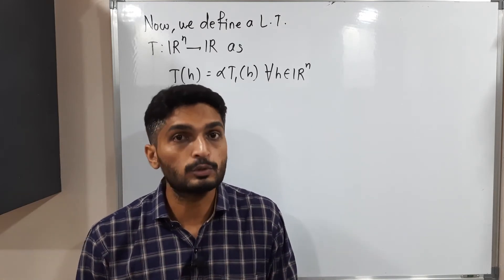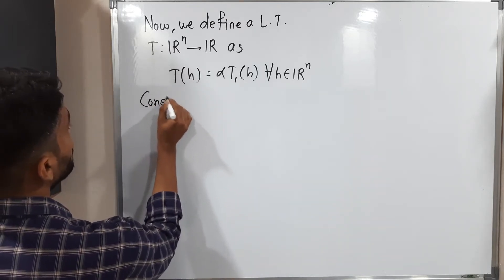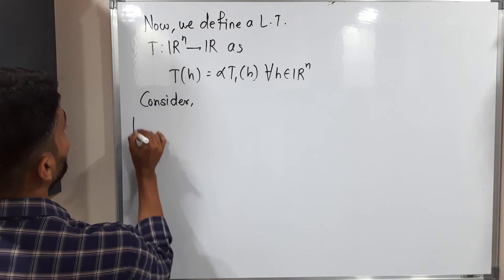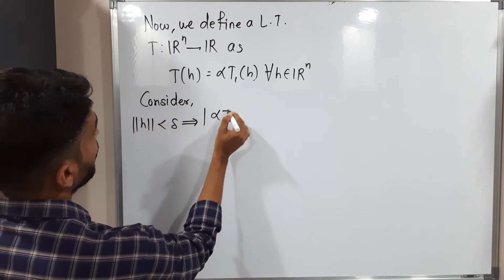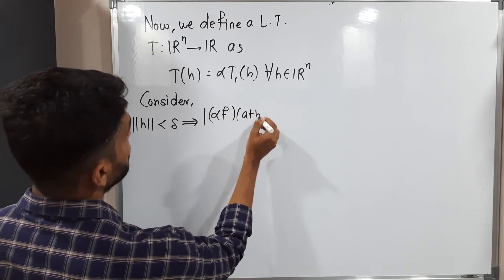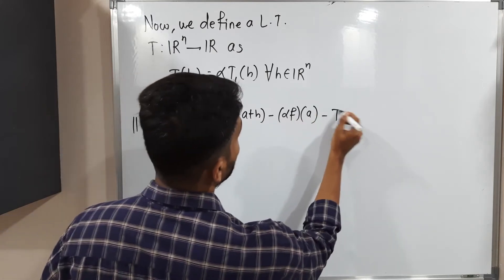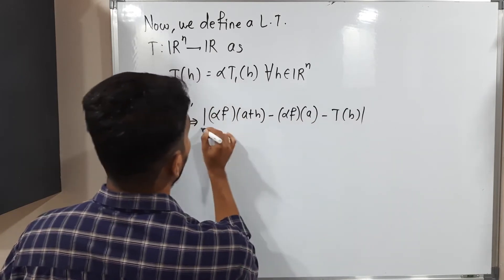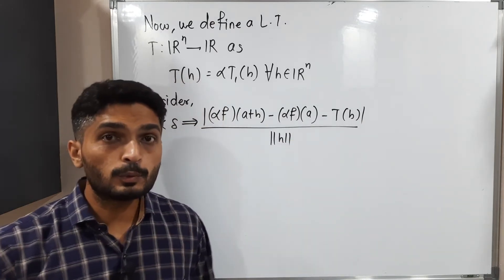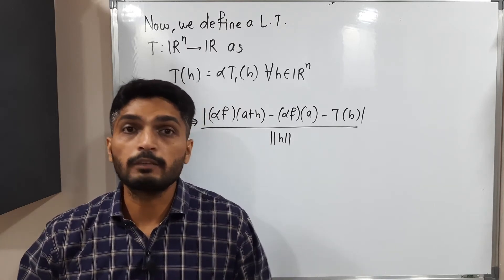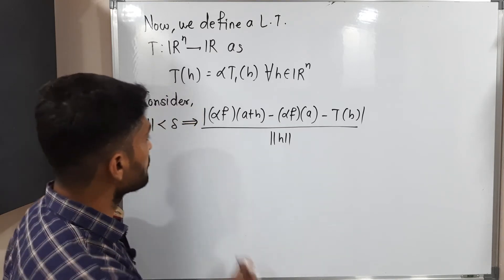Let us prove it using the epsilon-delta definition. Consider norm(H) less than delta, and examine: |α·F(A+H) − α·F(A) − T(H)| divided by norm(H). Our target is to prove that this expression is less than epsilon. If we can prove this, then we can directly declare that αF is differentiable.